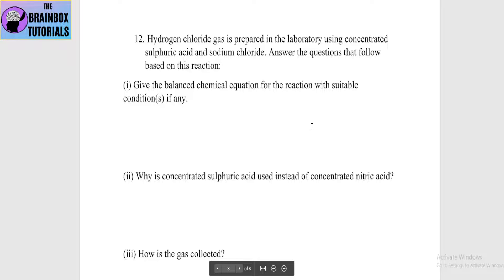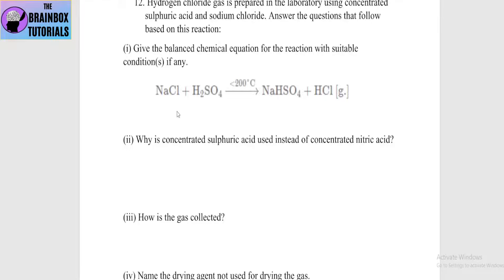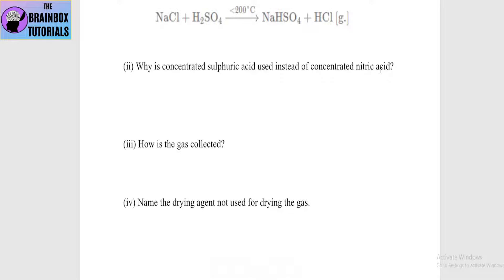Next 2020 question: hydrogen chloride gas is prepared in the laboratory using concentrated sulfuric acid and sodium chloride. Give the balanced chemical equation with suitable conditions. The reaction: NaCl + H2SO4 (concentrated), at less than 200°C → NaHSO4 + HCl gas. Why is concentrated sulfuric acid used instead of concentrated nitric acid? Because concentrated H2SO4 is non-volatile — its boiling point is high.